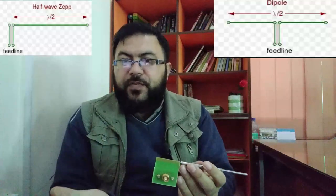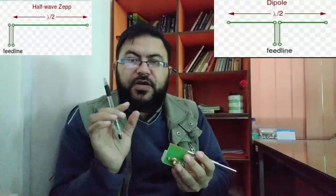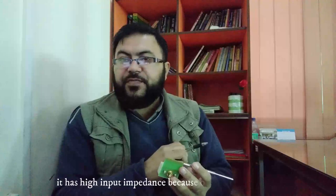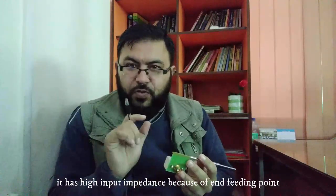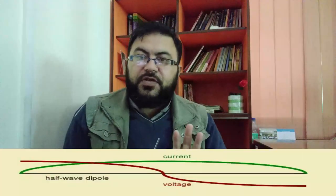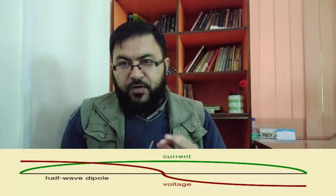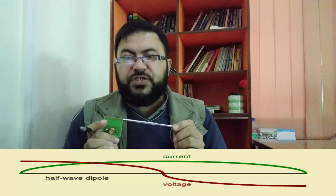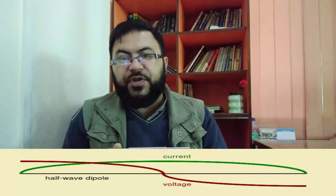What is the benefit of connecting the feed line at the end point rather than at the center point as in a dipole antenna? The main benefit is that it has a very high input impedance compared to connecting at the center. Additionally, this antenna has very high current at the center point and very low current at the end section, while the voltage at the end section is maximum and at the center is minimum.